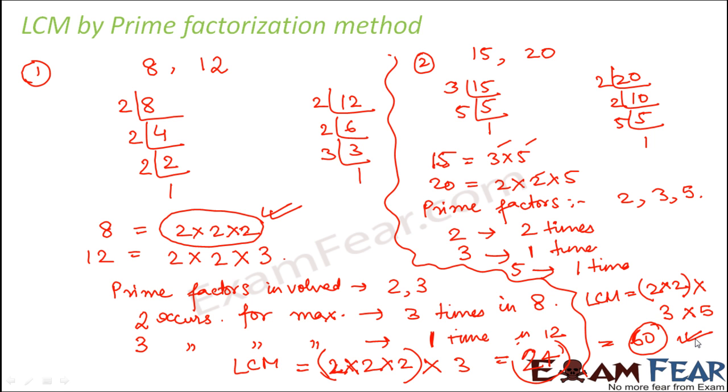So this is how we find out LCM by prime factorization method. So let us quickly review the method. What we do is first you factorize both the numbers. You write them as product of their prime factors. Then you find out what are the prime factors that are involved. So you make a note of them.